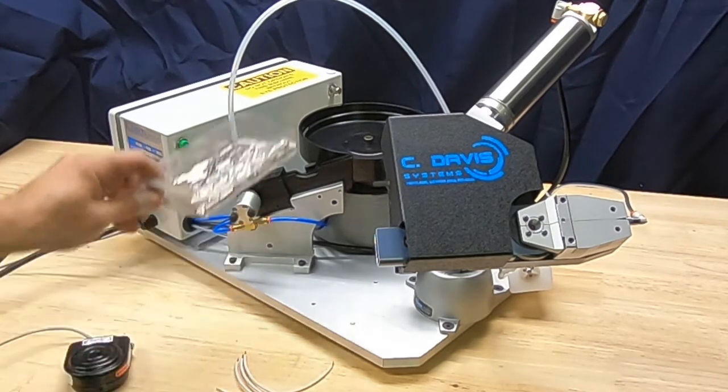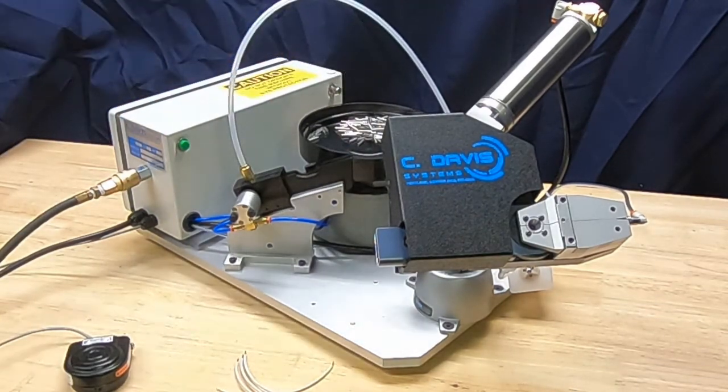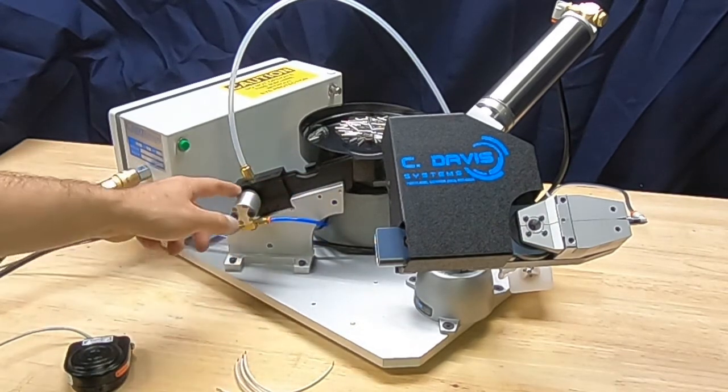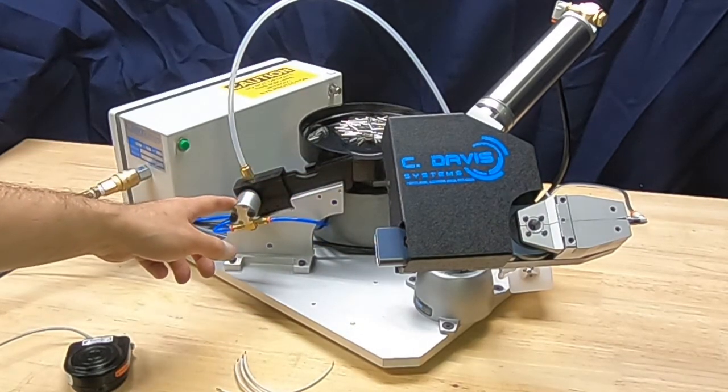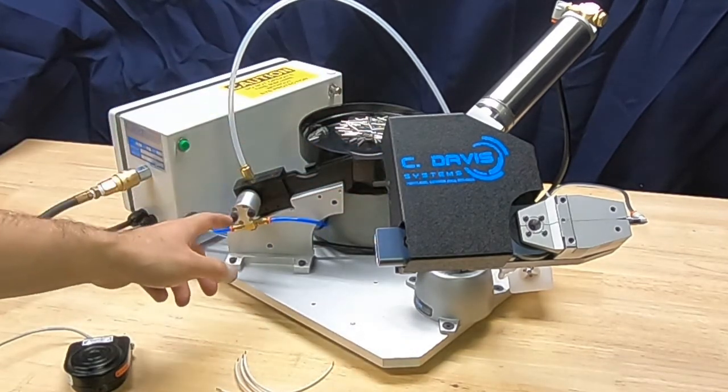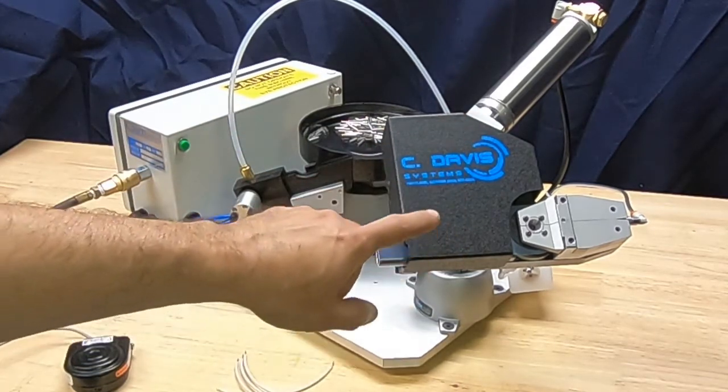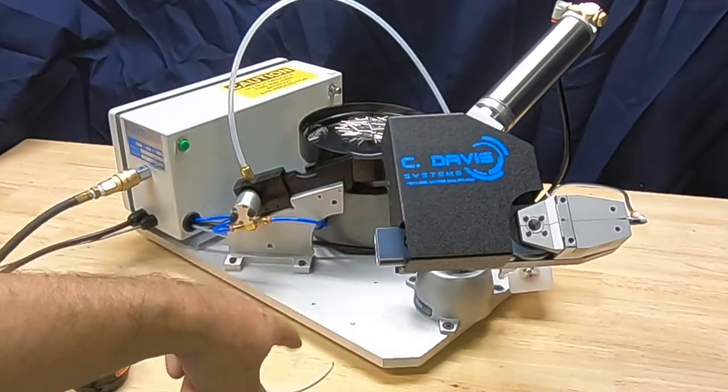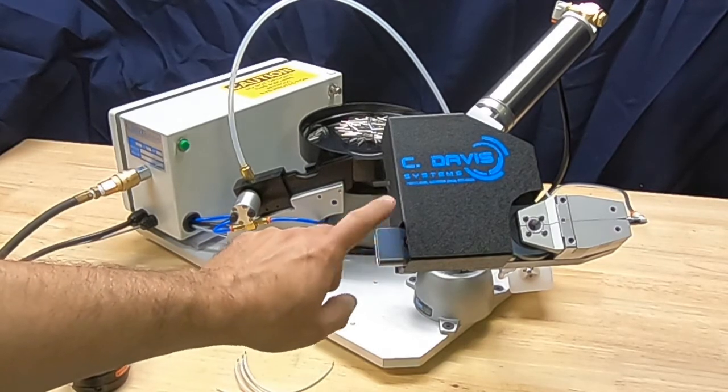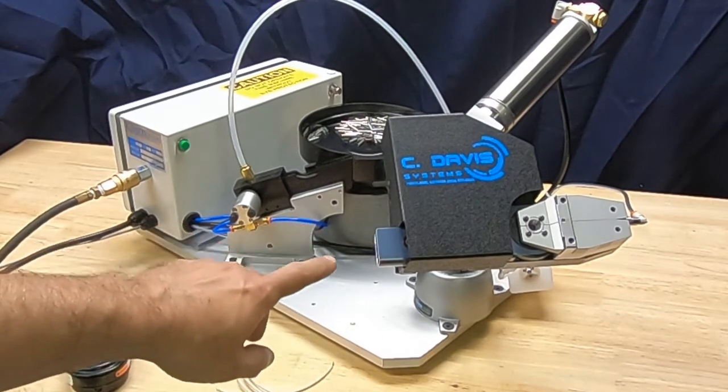This machine features a parts bowl which you pour loose parts into, a set of slides and a shuttle which we call an escapement, which will automatically feed and blow parts over to the crimp head. The crimp head is built around the Deutsch tool, which is the correct tool for crimping these, so you get the proper crimp.